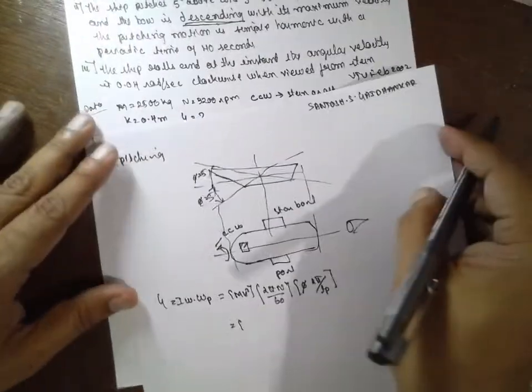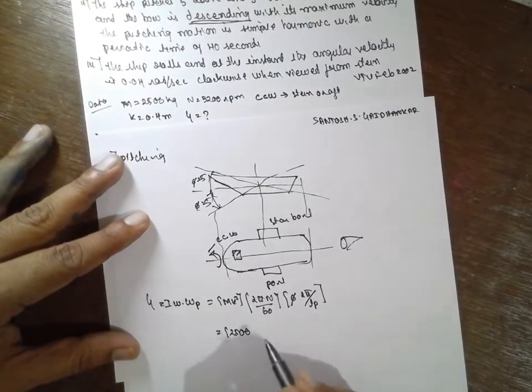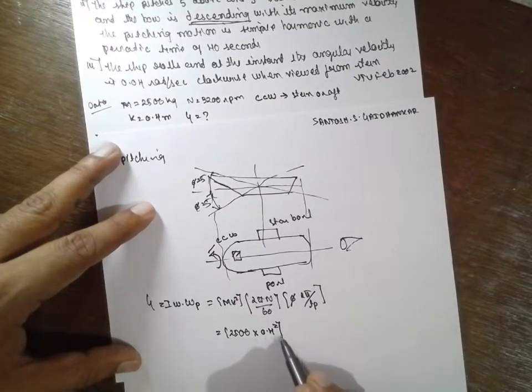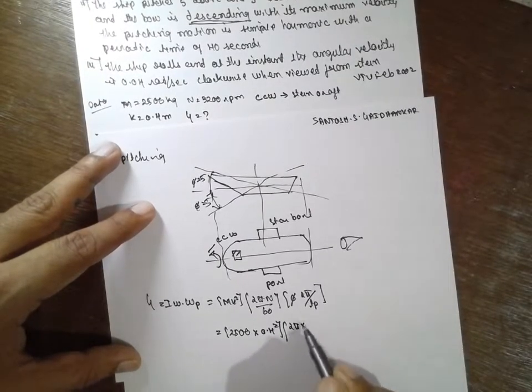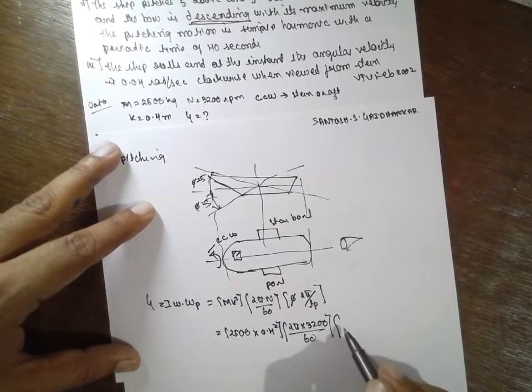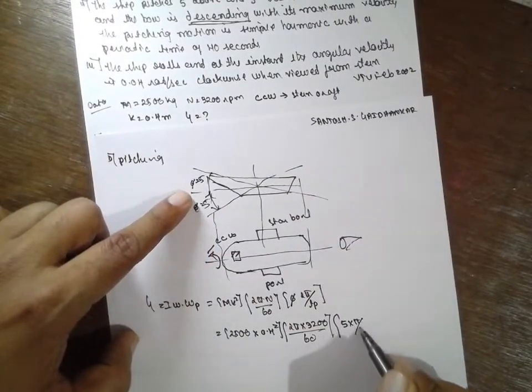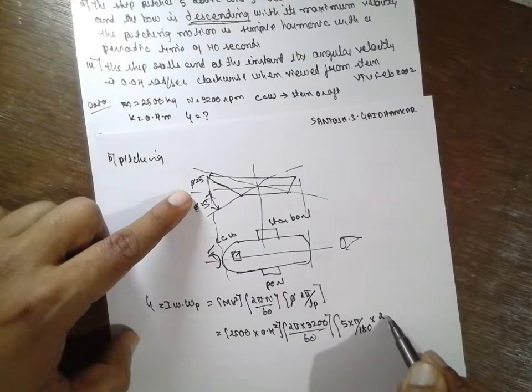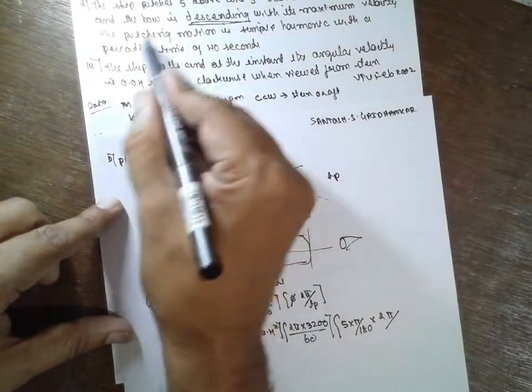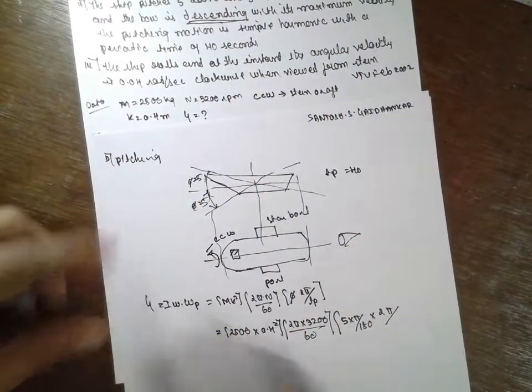m will be 1500, k is 0.4 square, 2 pi n will be 3200 divided by 60. Now phi is how much? Phi into pi by 180, into 2 pi divided by tp. tp as per the problem is 40 seconds.